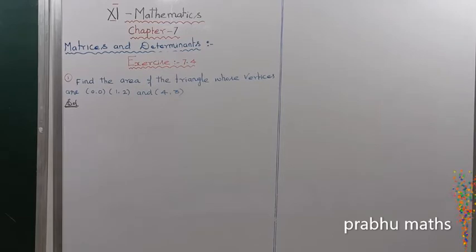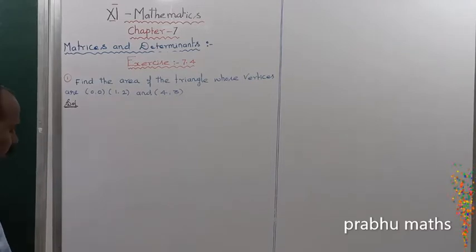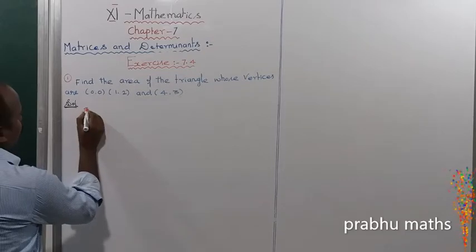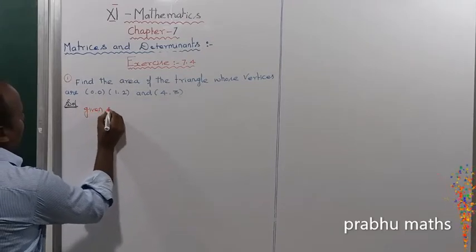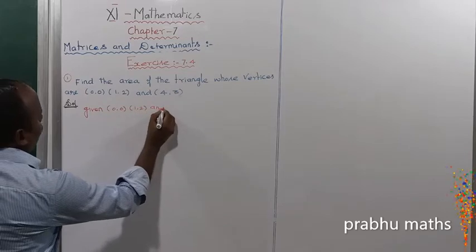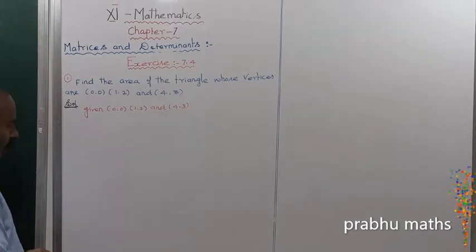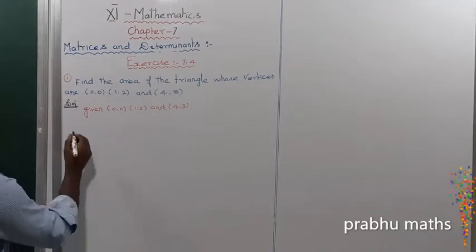Exercise 7.4: Find the area of the triangle whose vertices are (0,0), (1,2), and (4,3). The given vertices are (0,0), (1,2), and (4,3). We need to find the area of the triangle.